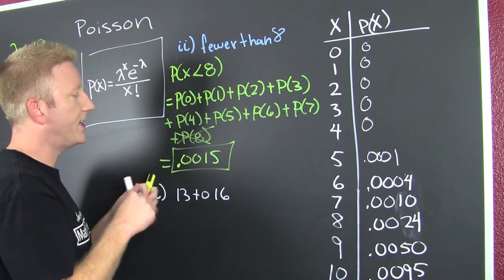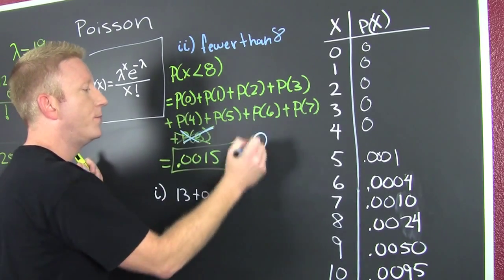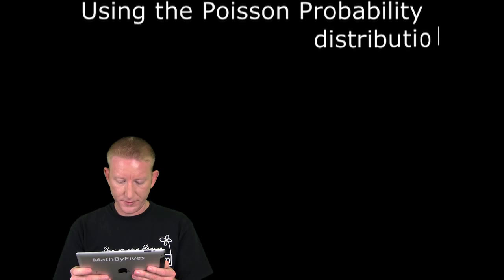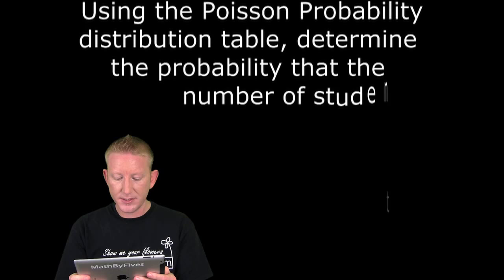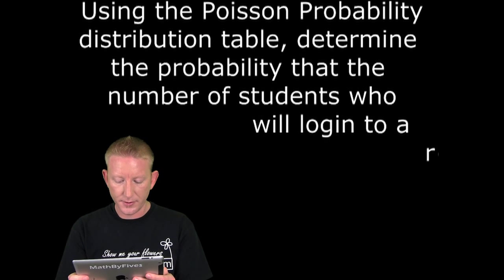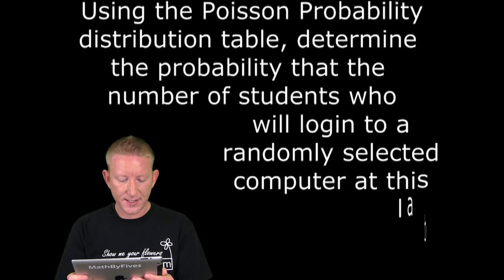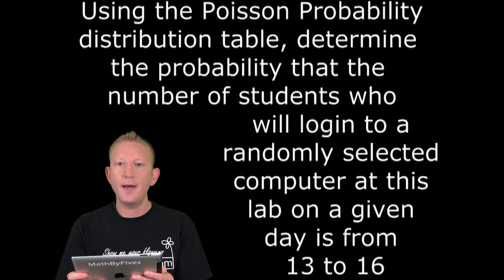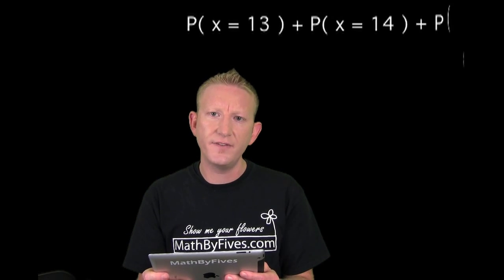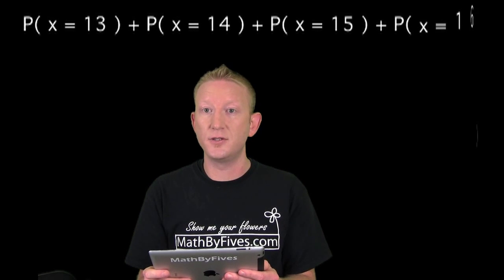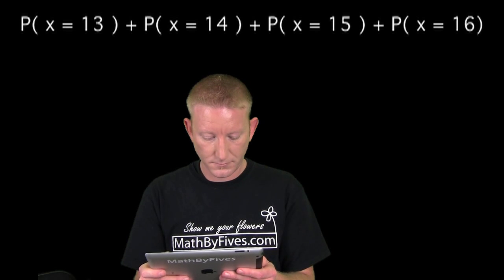Part B: using the Poisson probability table in the back of the book, determine the probability that the number of students who will log into a randomly selected computer in this lab on a given day is from 13 to 16. That means we need to find the probability that 13 students log in, plus the probability that 14 log in, plus the probability of 15, plus the probability of 16, and then add them.